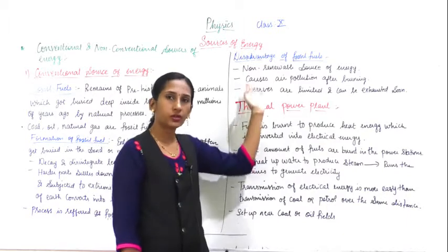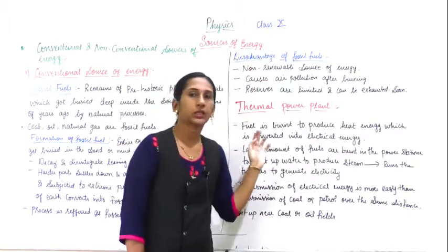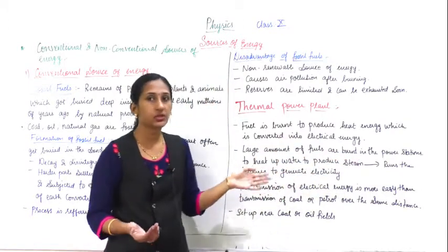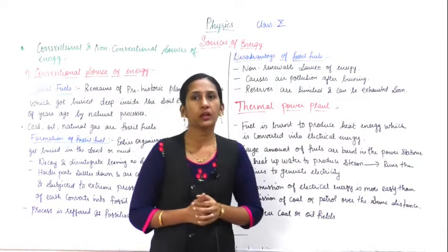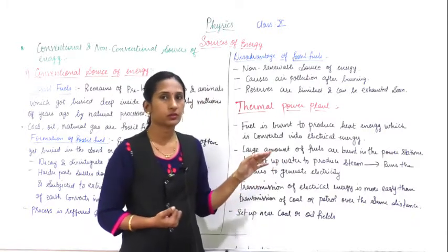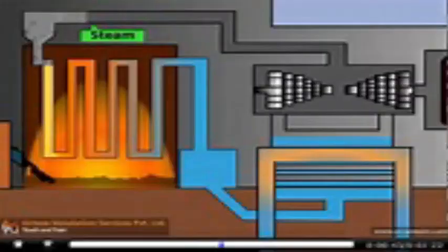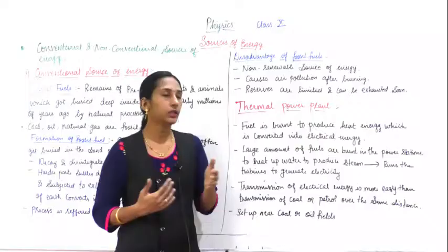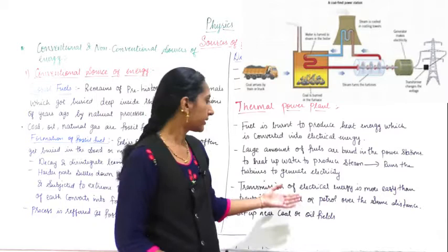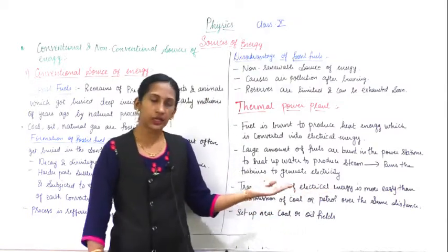Large amounts of fossil fuels are brought to the power station and burned to heat water. As they are using more and more fossil fuels, it can be exhausted easily. The water is heated, steam is produced, and this steam is used to rotate large turbines, which generates electricity.